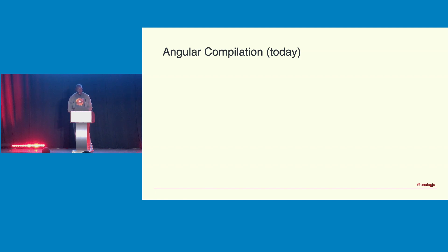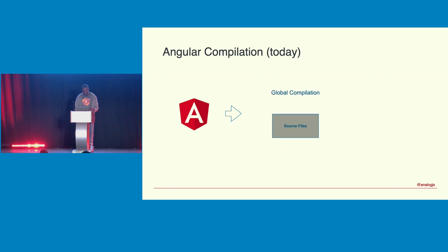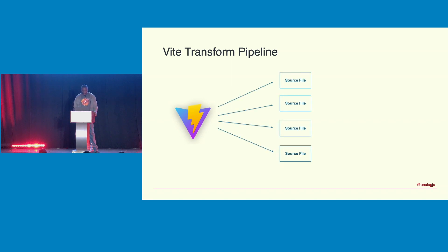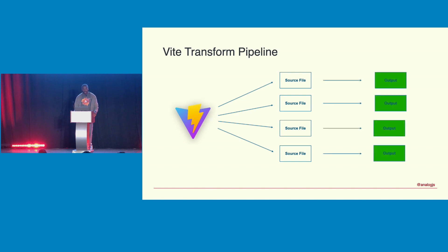Angular's compiler wraps the TypeScript compiler to provide Angular-specific metadata. It operates at a global level, with knowledge of all the files in your project, and produces output using more of a bundle-based approach. Vite works differently — it uses single-file compilation, processing files in parallel and producing output much faster, giving you feedback more quickly and speeding up the development cycle.